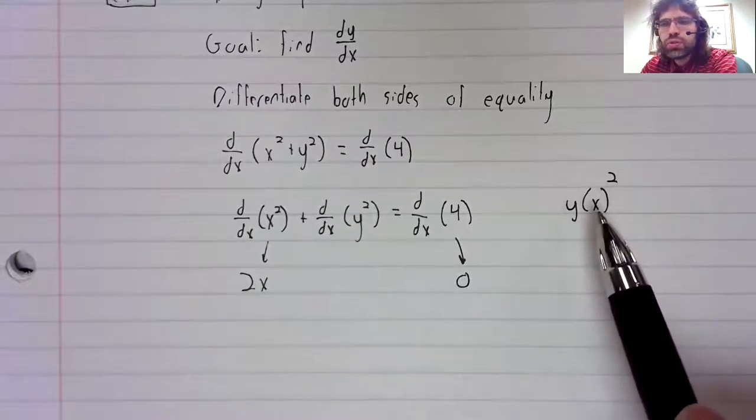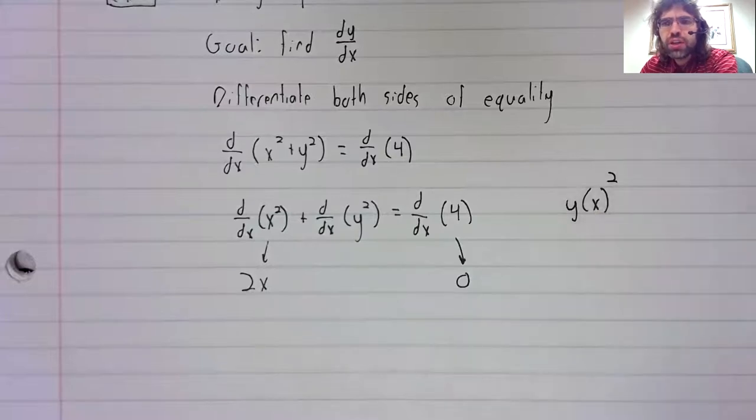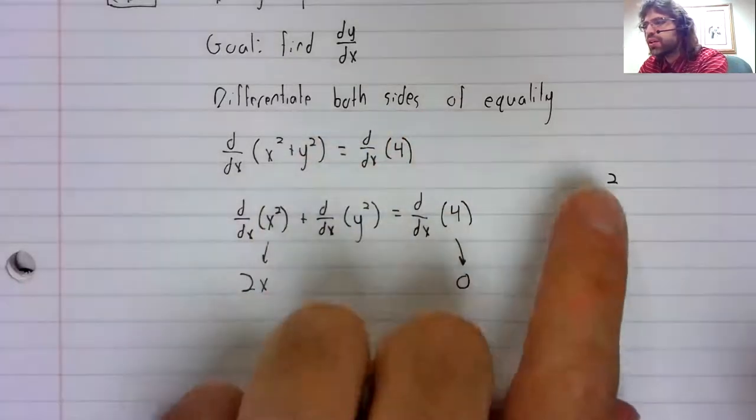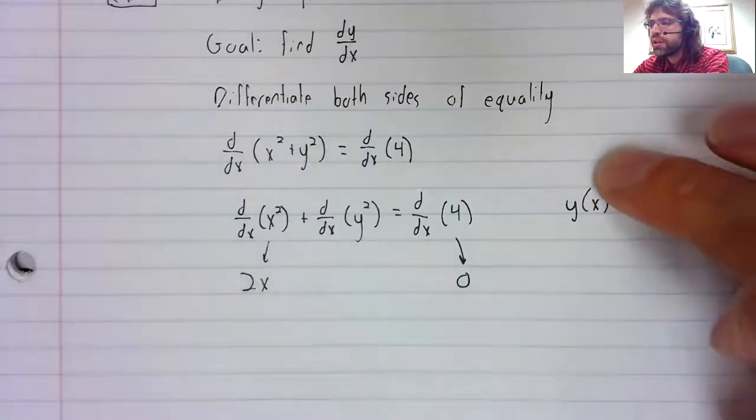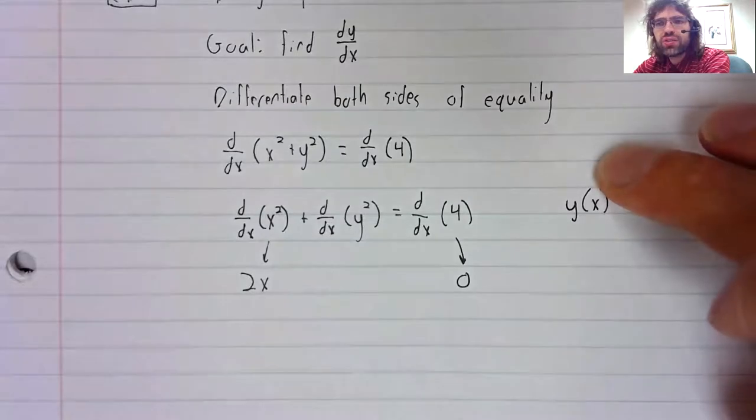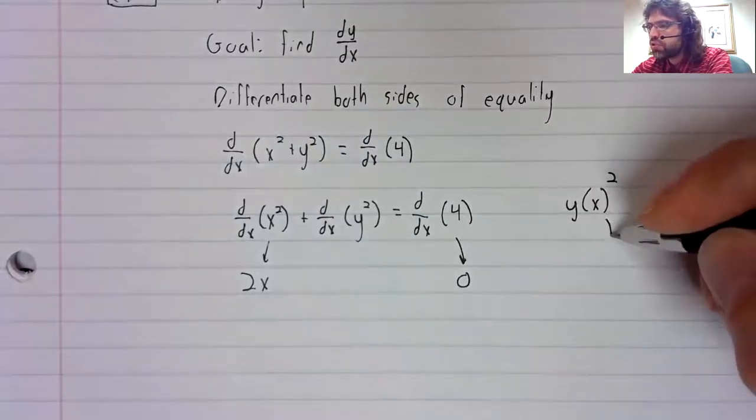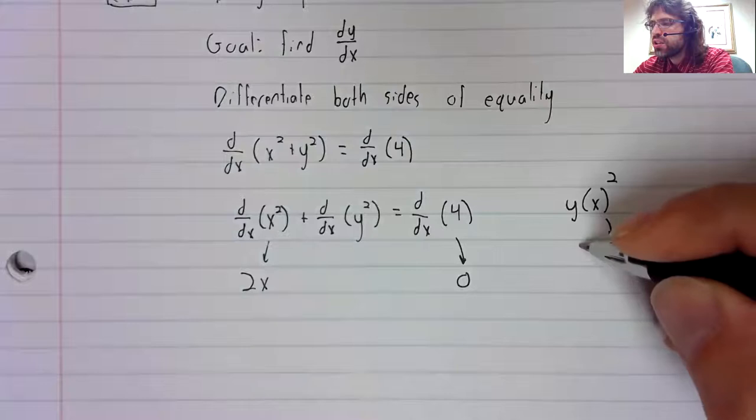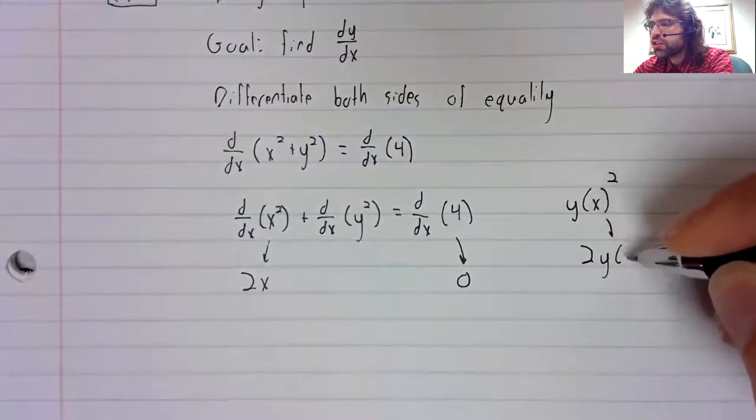Suppose you wanted to differentiate this. You now have a composition. The squaring is an outside function. This y of x is an inside function. And the chain rule says to take the derivative of the outside function.